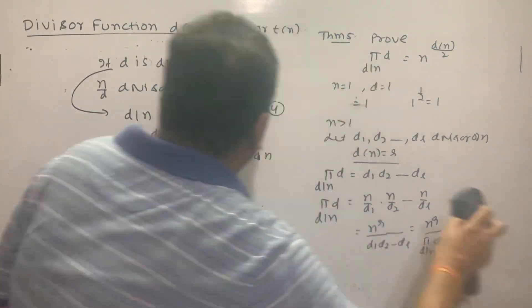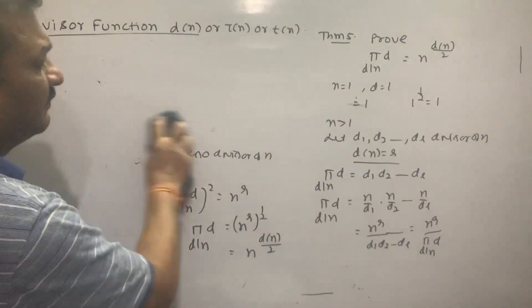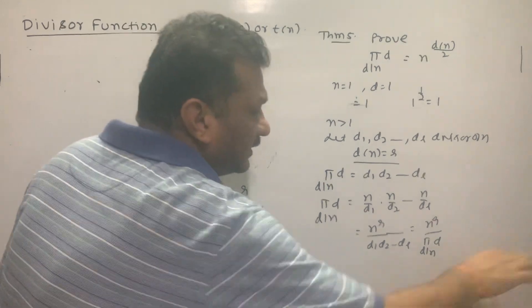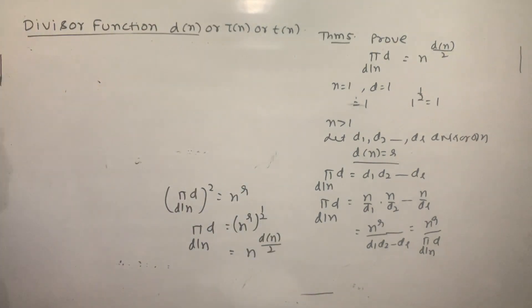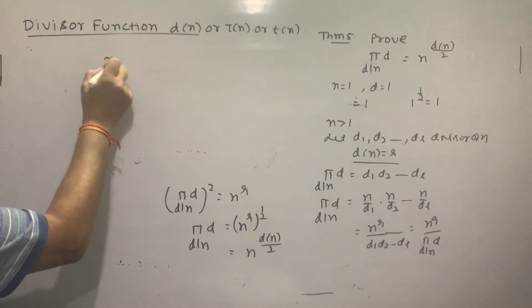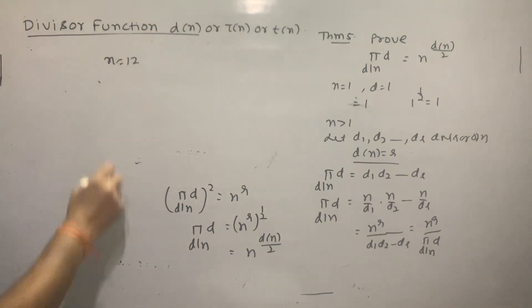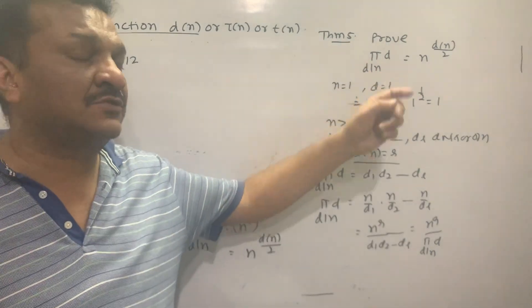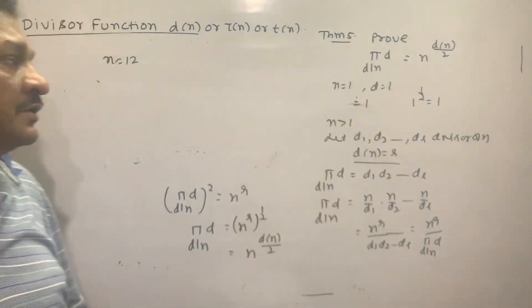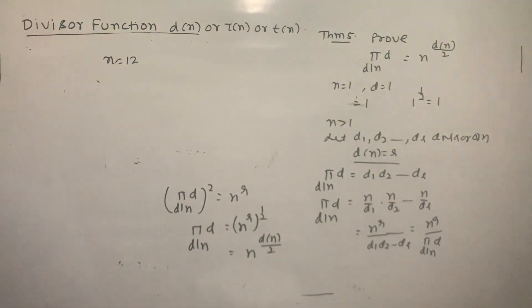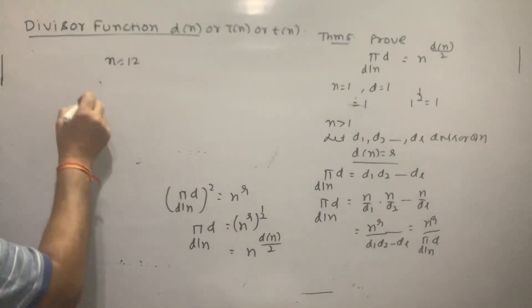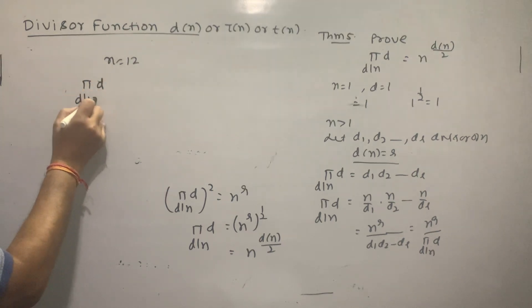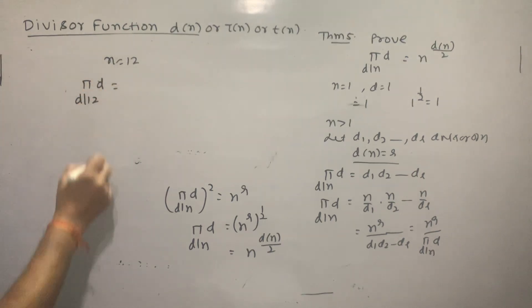Let us verify this result. Take n equal to 12. We need to verify that the product of divisors of 12 equals 12^(d(12)/2).